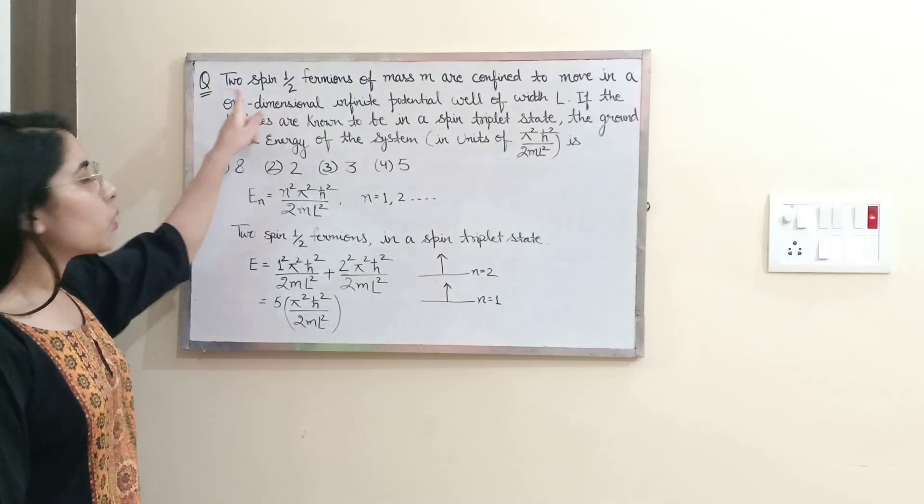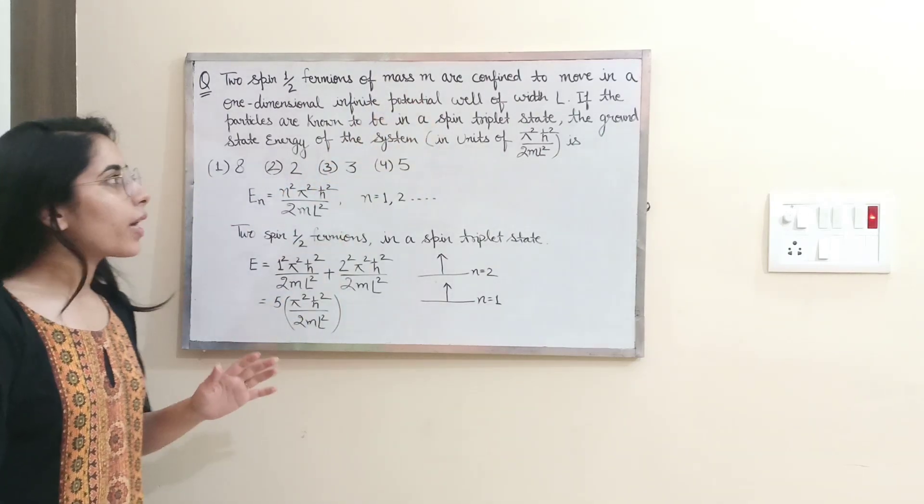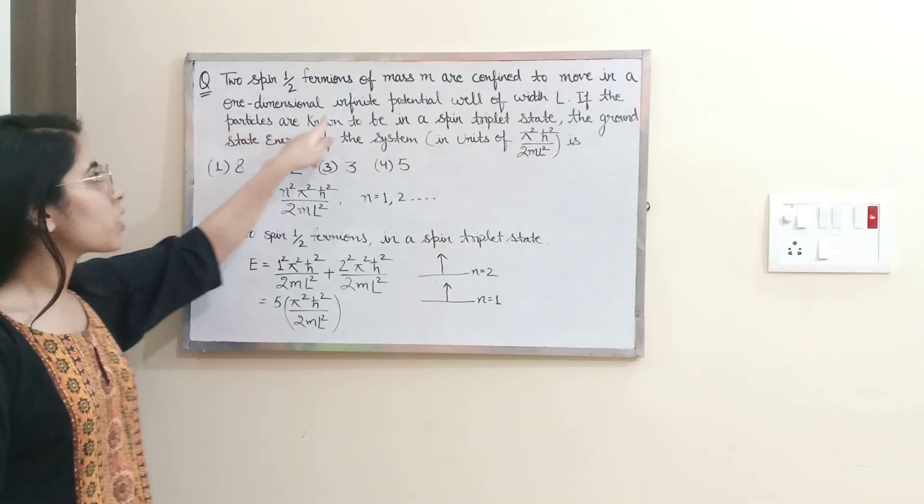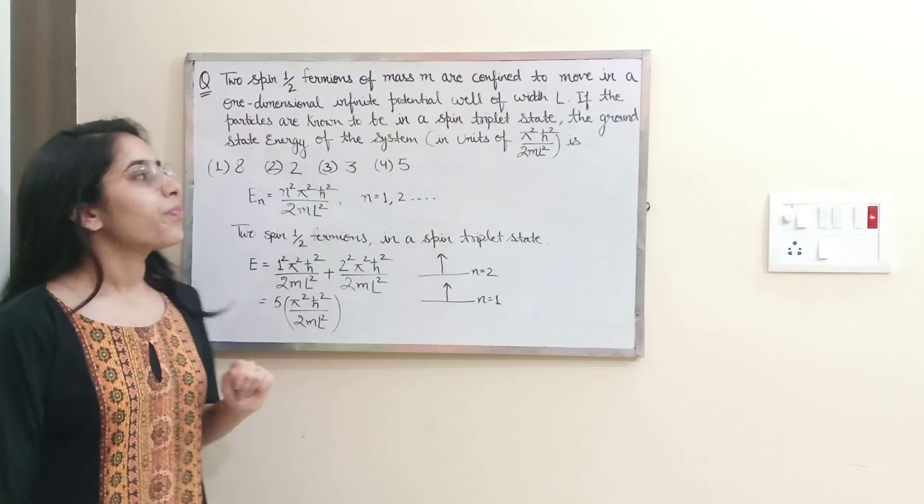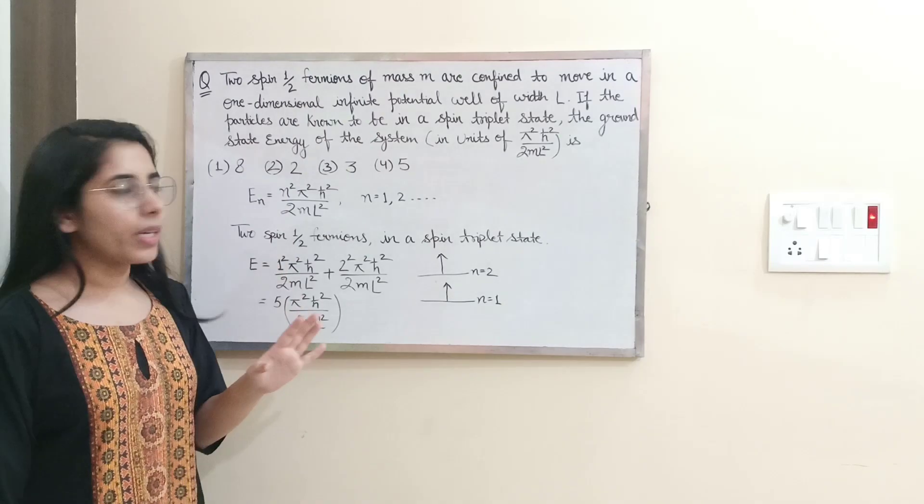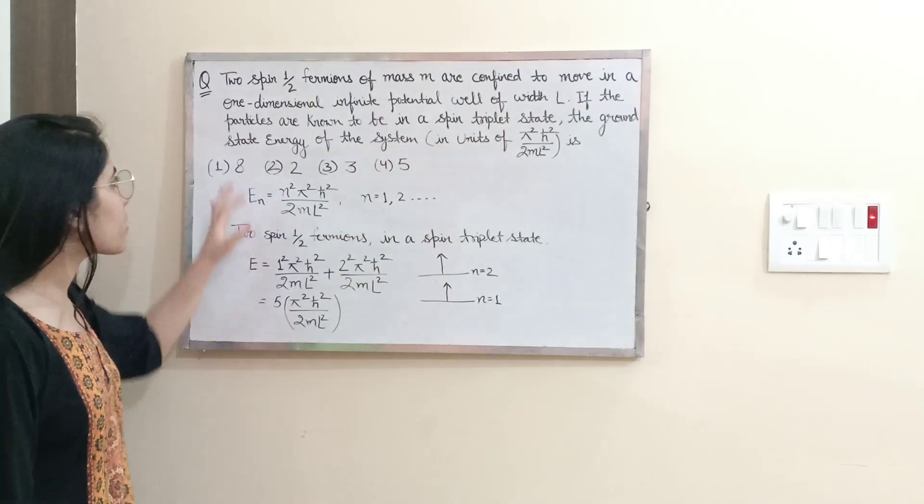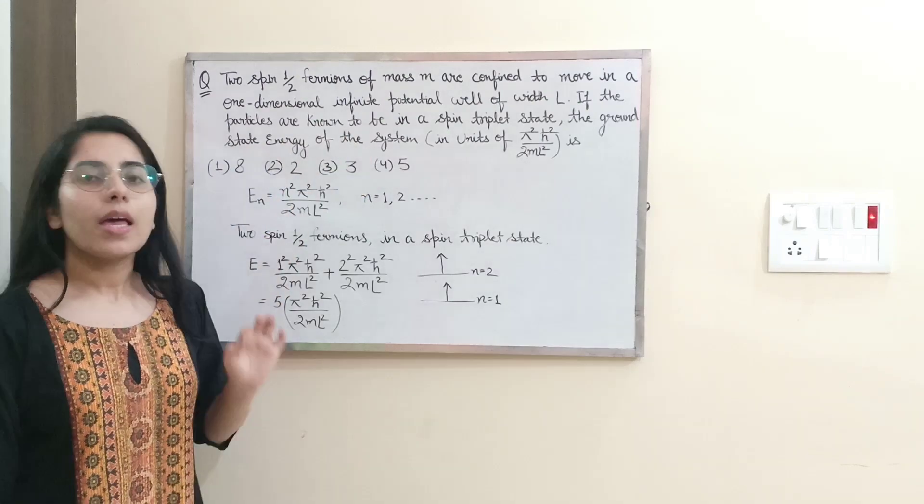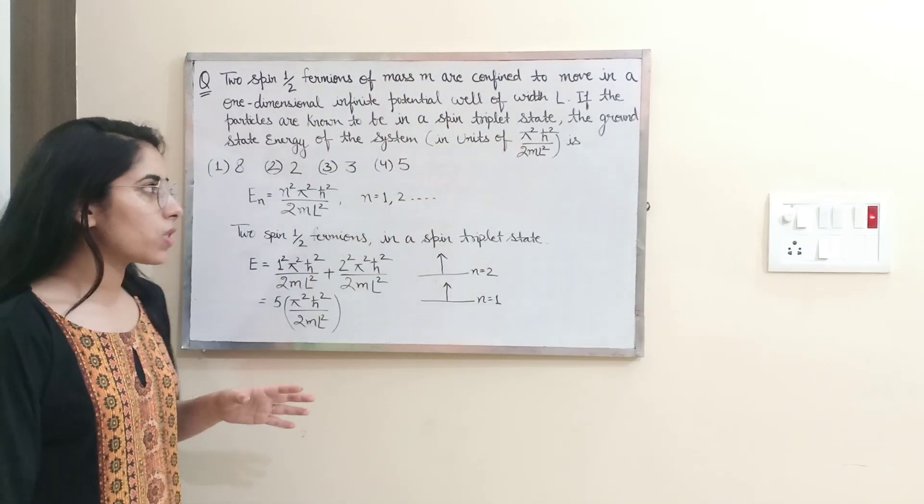The question is: two spin half fermions of mass m are confined to move in a one dimensional infinite potential well of width l. If the particles are known to be in a spin triplet state, the ground state energy of the system in units of π² ℏ² upon 2ml² is.